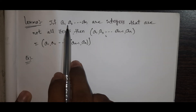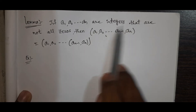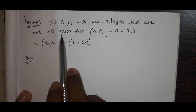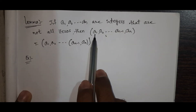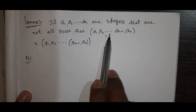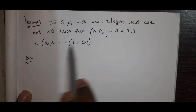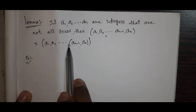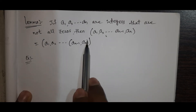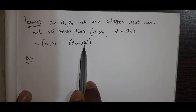If A1, A2, so on, An are integers that are not all zeros, then GCD(A1, A2, ..., An) equals GCD(GCD(A1, A2, ..., An-1), An). So first we find the GCD of the first n-1 numbers, and then find GCD with the nth number.